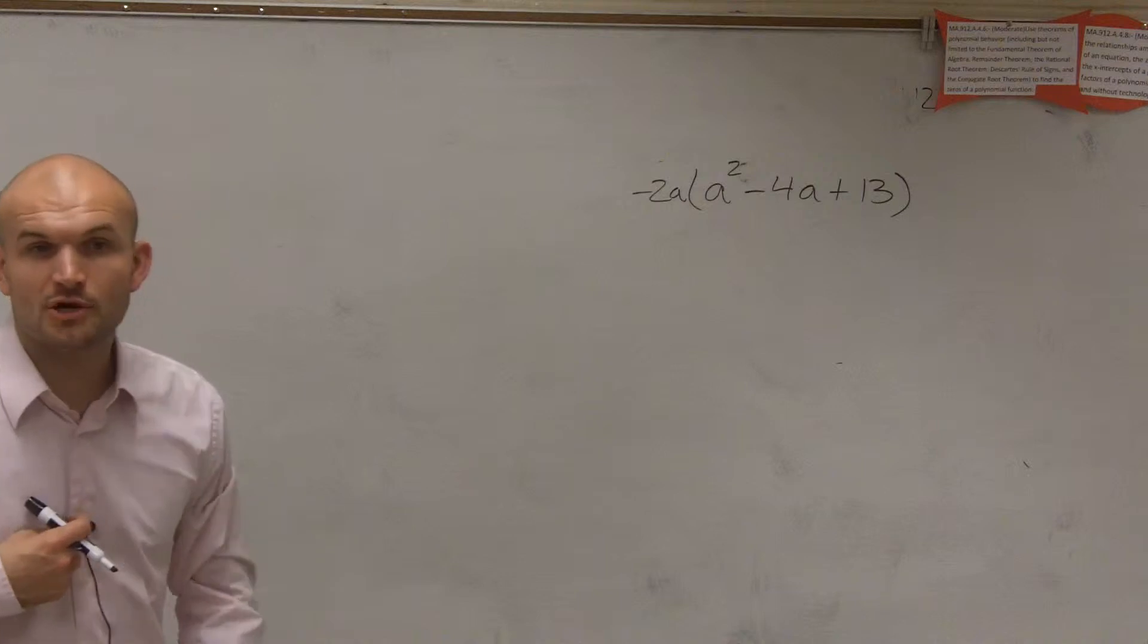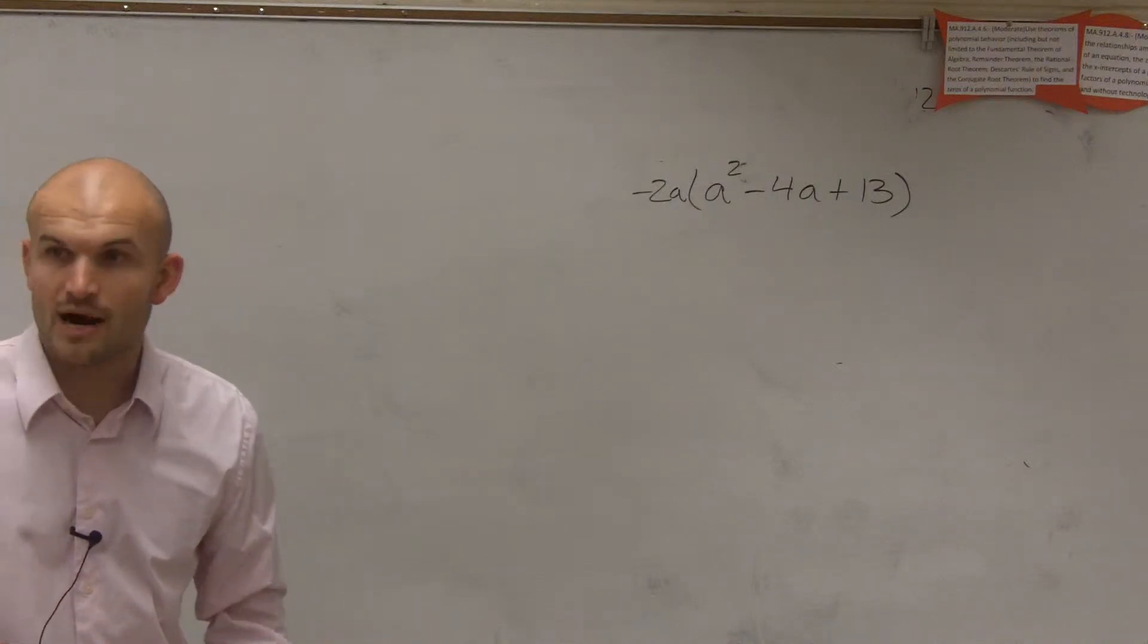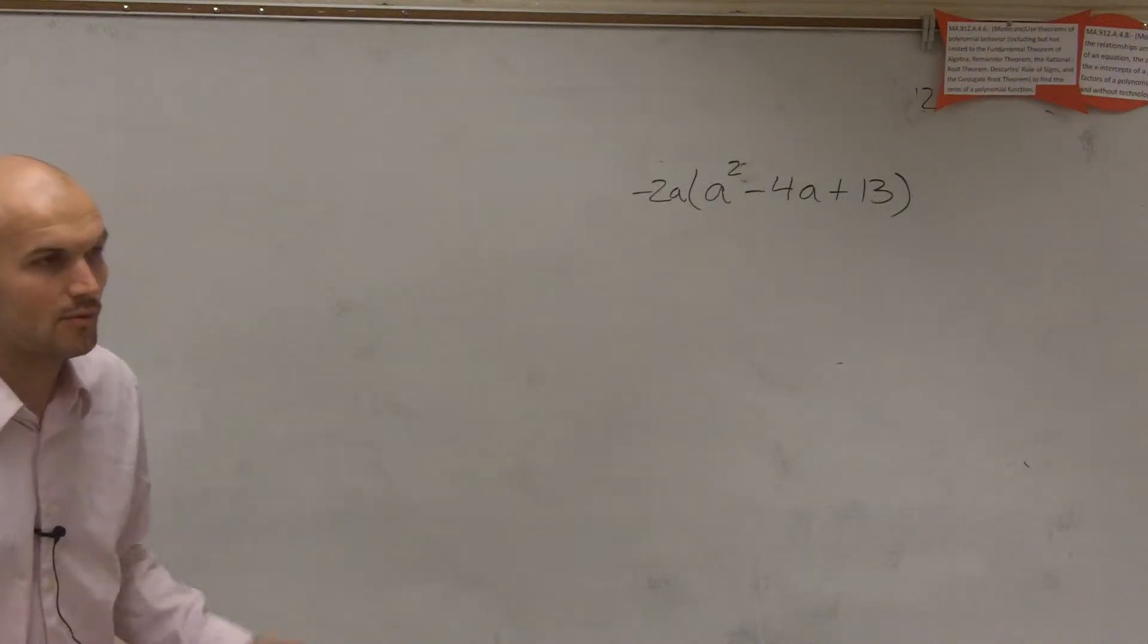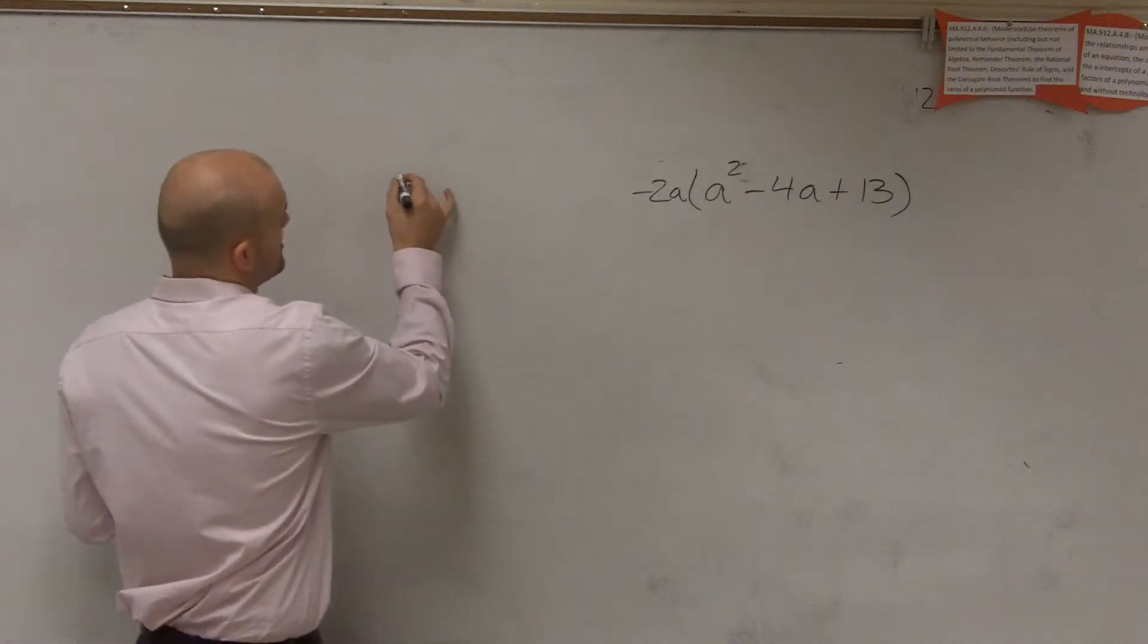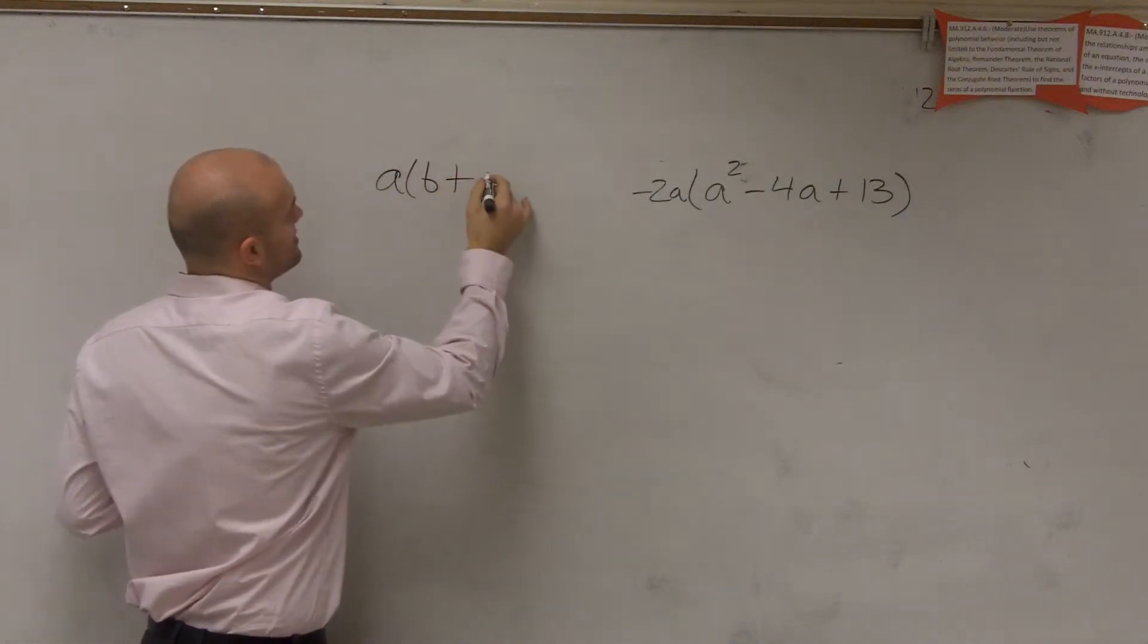OK. So for this problem, what we're going to apply is what we call the distributive property. And the distributive property can more formally, if you're going to write this down, just be written as A times B plus C.